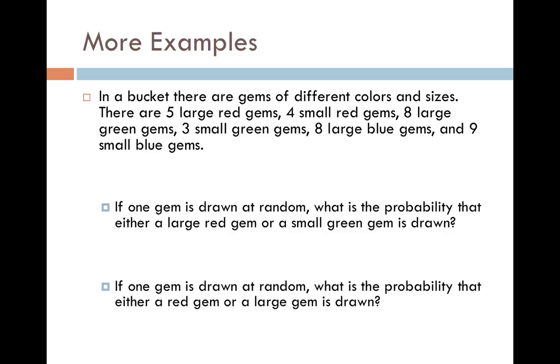Here's our problem. If one gem is drawn at random, what is the probability that either a large red gem or a small green gem is drawn? Well, these are mutually exclusive. You can't be a large red and a small green at the same time.